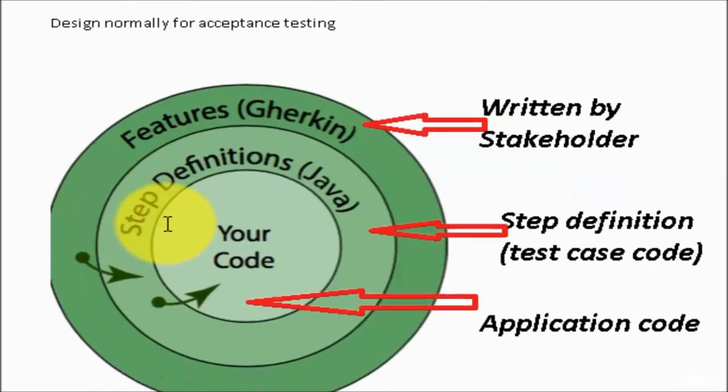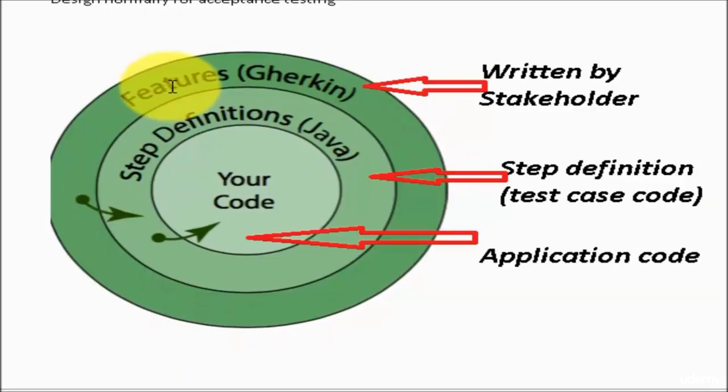In this diagram, we can see first we are defining the behavior—features. Features means the behavior written by stakeholders, what they expect from the application. Based on that behavior, we move to the second layer, starting from the outer layer and moving inward.